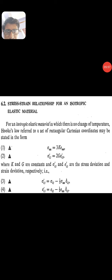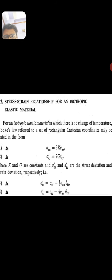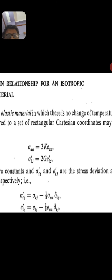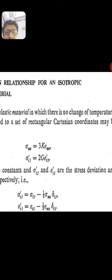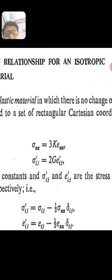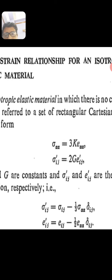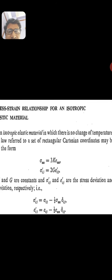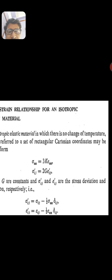For an isotropic elastic material in which there is no change of temperature, Hooke's Law referred to a set of rectangular Cartesian coordinates gives: σ_aa = 3K ε_αα, and σ'_ij = 2G ε'_ij, where G is the modulus of rigidity, K is the bulk modulus, and σ'_ij and ε'_ij are the stress deviator and strain deviator respectively.